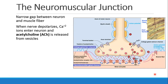Let's start by reviewing the neuromuscular junction, which is the narrow gap between the neuron and the muscle fiber. When the nerve depolarizes, calcium ions enter the neuron, and acetylcholine is released from the vesicles in the nerve terminal.